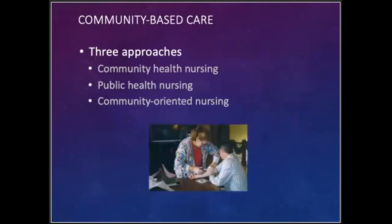Our community-based care has three approaches. Community health nursing focuses on how the health of individuals, families, and groups affects the community as a whole. Community health nurses strive to promote, protect, preserve, and maintain the health of the population through delivery of personal health services. Public health nursing focuses on community as a whole and the eventual effect of community's health status on the health of individuals, families, and groups. Community-oriented nursing combines components of community and public health, focusing on health promotion, illness prevention, early detection, and treatment provided within the community setting. The practice is evidence-based and collaborative with other community health disciplines.